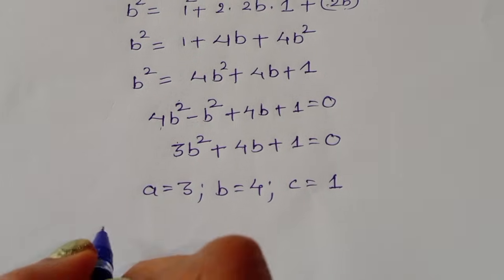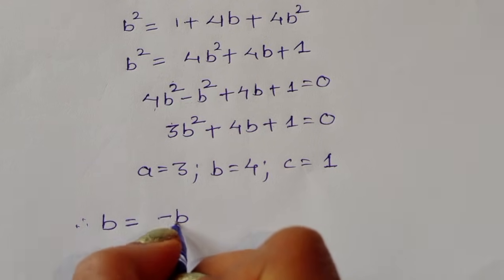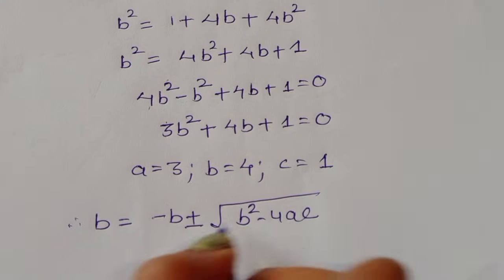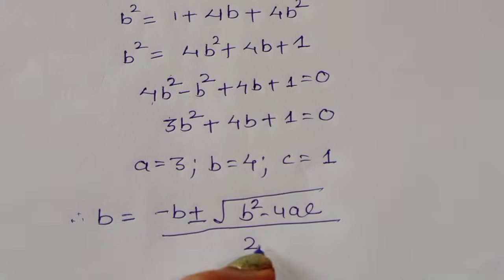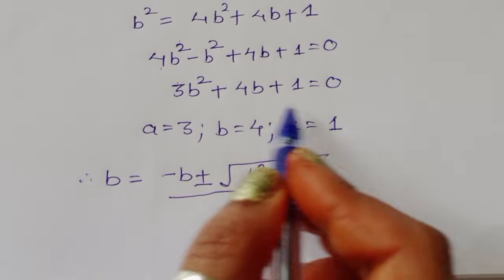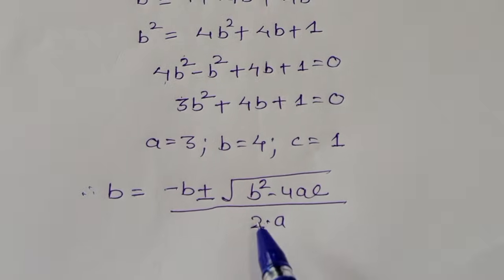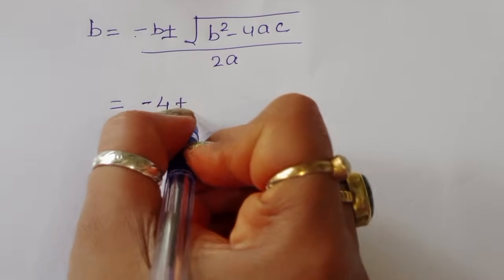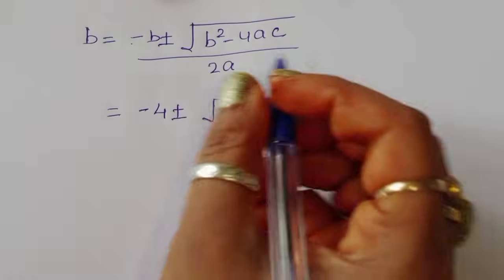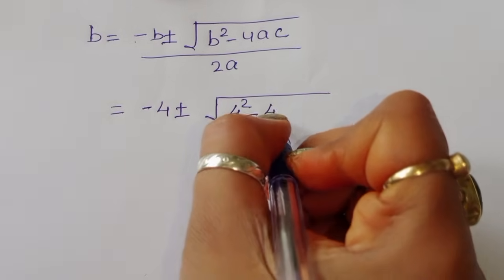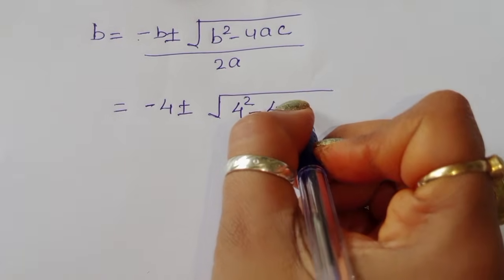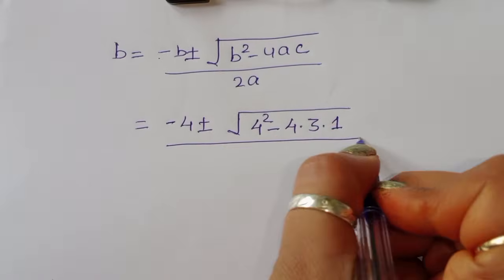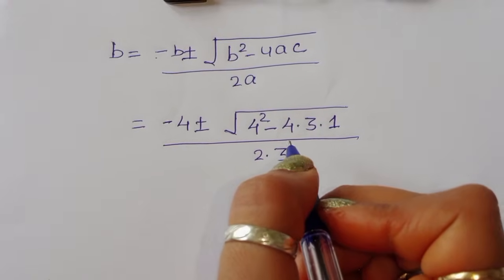Using the quadratic formula: b equals negative b plus or minus square root of (b squared minus 4ac) upon 2 times a. Substituting: minus 4 plus or minus square root of (4 squared minus 4 times 3 times 1) divided by 2 times 3.